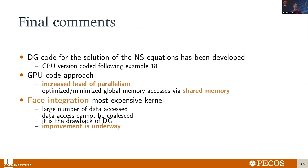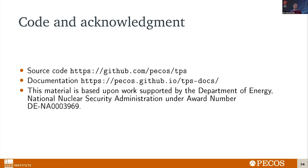That's pretty much all I had. Just to recap: we have this code, it's open source and it's available. We have a GPU version and it's working, though it doesn't have all the features of the CPU version. We have tried to increase the level of parallelism and tried to use a lot of shared memory. The face integration is something we're still working on, and we've been able to get some improvements so far. I just wanted to acknowledge the support of the Department of Energy — this is a project funded by the Department of Energy and the National Nuclear Security Administration. Thank you.